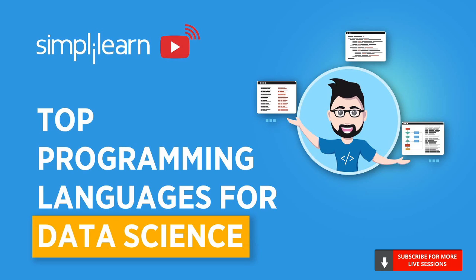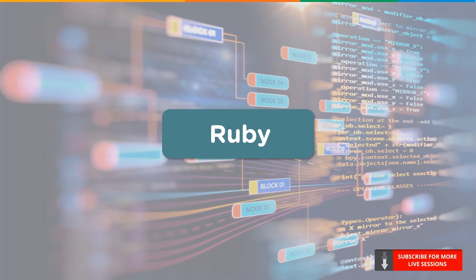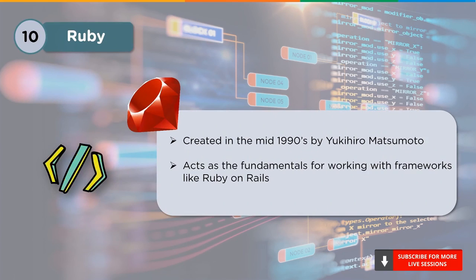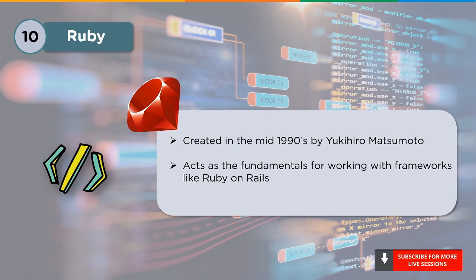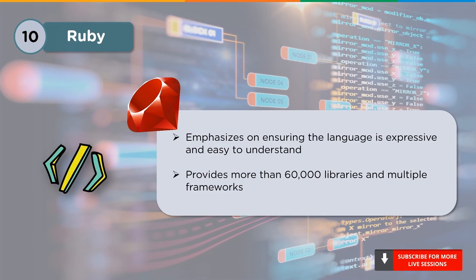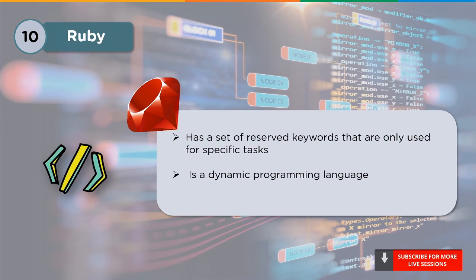We're ready to begin the session now. At number 10, we have Ruby. Developed by Yukihiro Matsumoto, Ruby is one of the top programming languages used. It is the basis for frameworks like Ruby on Rails. It has an expressive and easy-to-understand syntax, provides over 60,000 libraries, has a definitive set of keywords, and is dynamically typed.